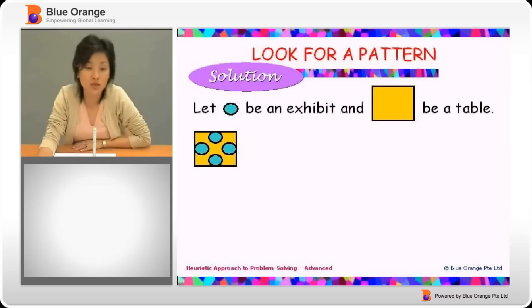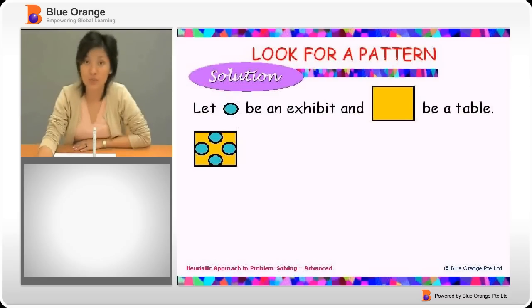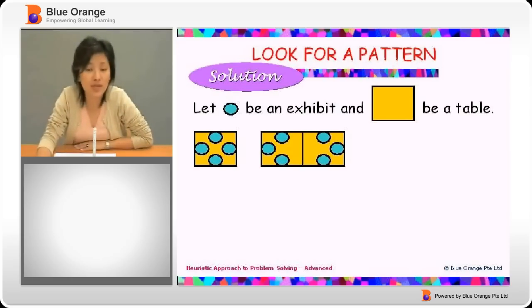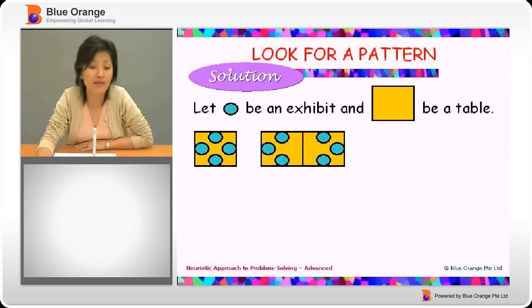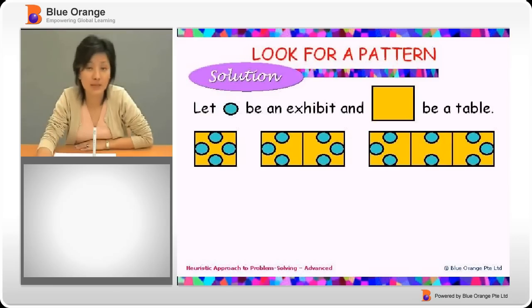First of all, we have one table with four exhibits. Remember, it's one at each side. Now if there are two tables, we realize that we can't put an exhibit in the middle because it will be blocked. So for two tables we will have six exhibits. What about three tables? In three tables we will have eight exhibits.